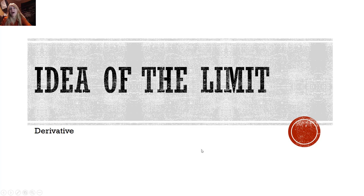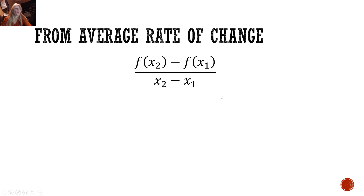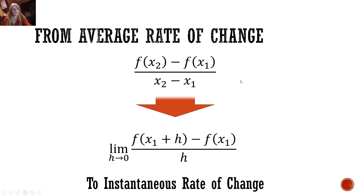Let's talk about the whole idea of the limit. We started out finding slope: (y₂ − y₁) / (x₂ − x₁). Then instead of y₂ − y₁ we called it evaluating the function, so f(x₂) minus f(x₁). Then we came back and called the interval h — that's what we keep calling the gap as it gets smaller and smaller.